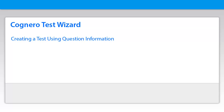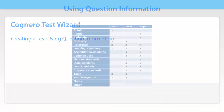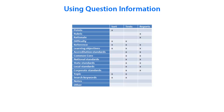In addition to the question text and answers, questions can contain other information such as learning objectives, standards, and difficulty level, which you can use to build your test. This table summarizes the available question information and how you can use it. For example, you could build a test based on a series of learning objectives, sort that test by difficulty level, and then view a report of the student's proficiency level on those objectives after they've taken the test.